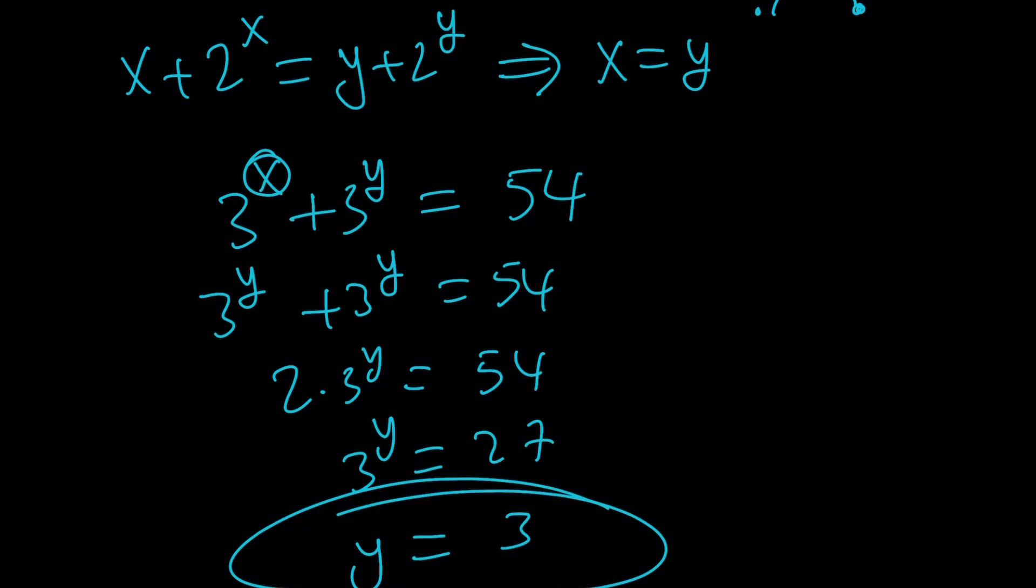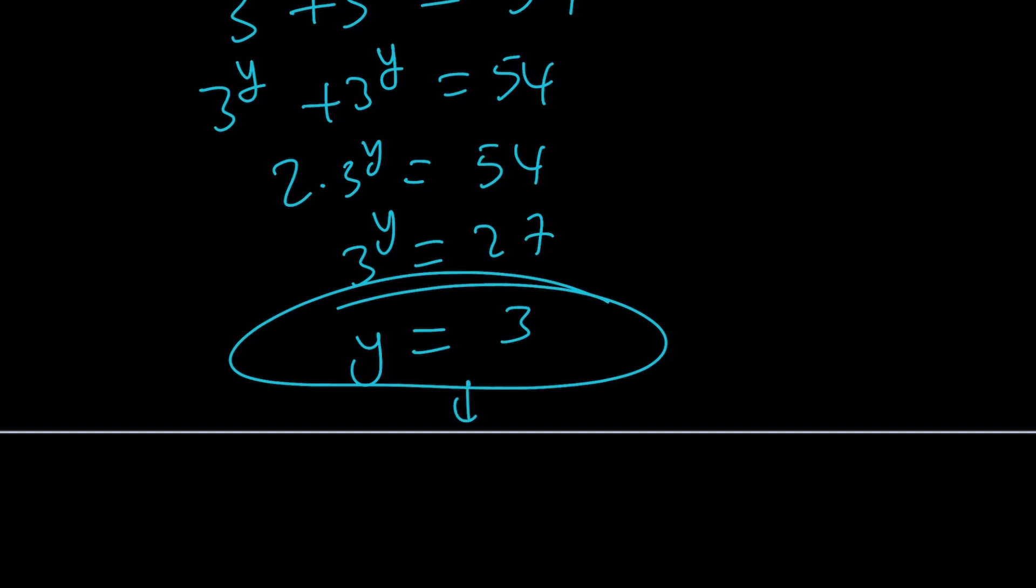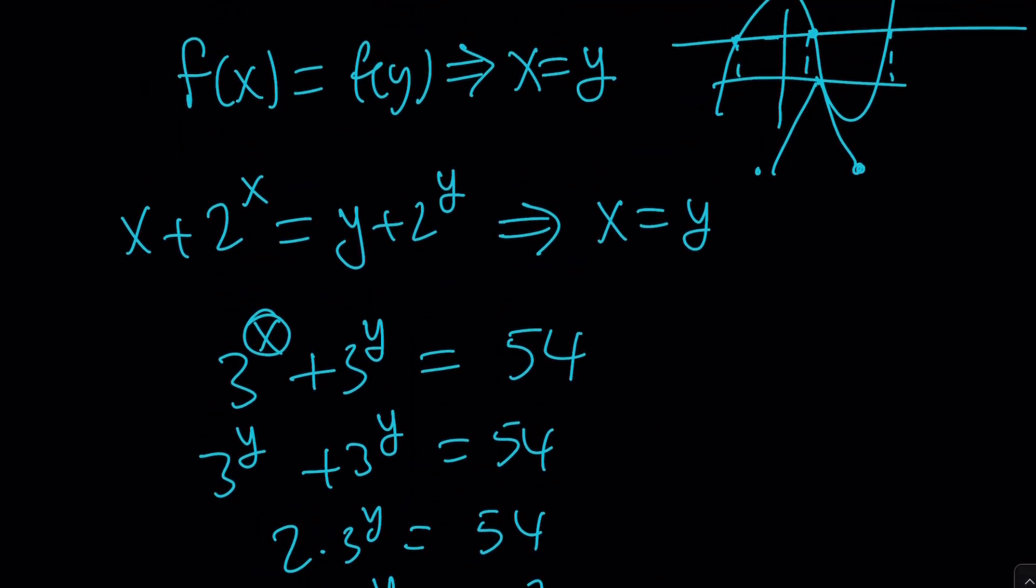If y = 3, obviously x is also going to be 3 because x = y. That was our finding, which was super important because that basically gave us the solution. Make sense?